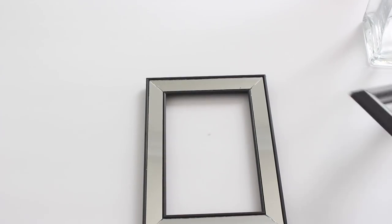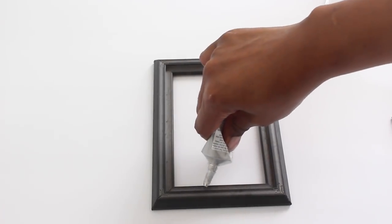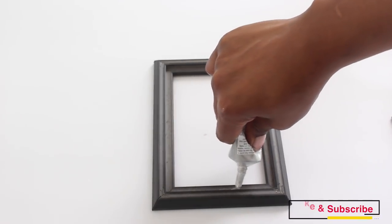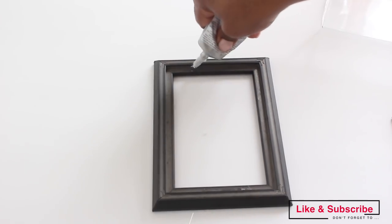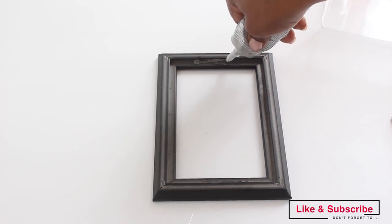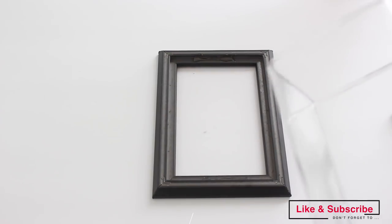Next, I'm going to flip it over and add E6000 to the middle of the frame on the top and the bottom. Then I'm going to take the vase and just center it inside of the frame.